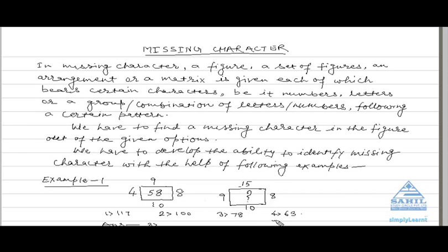Solution. In the first figure, 9 into 10 minus 4 into 8 means 9 into 10 is 90. 4 into 8 is 32. Means 90 minus 32 is equal to 58. Then 15 into 10 is equal to 150. 9 into 8 is 72. 150 minus 72 is equal to 78. So the answer choice is 3, that is 78.